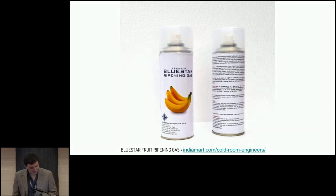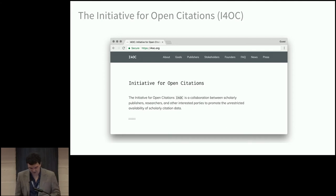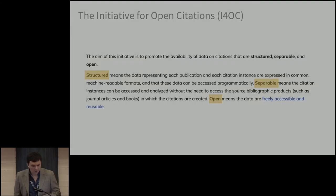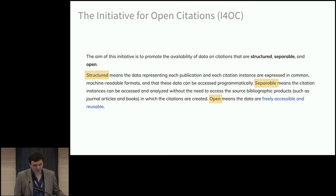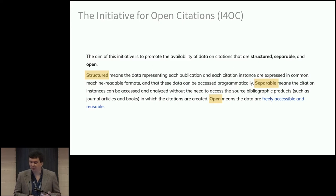Let me tell you about the Initiative for Open Citations. This initiative's stated goal is to promote the unrestricted availability of scholarly citation data. What we mean by open citation data is threefold: one, it's machine-readable — this data must be available not just for humans but also for machines; two, data is separable, meaning it is separate from the underlying bibliographic source it represents; and three, this data is freely accessible, reusable, and subject to no copyright restriction whatsoever.